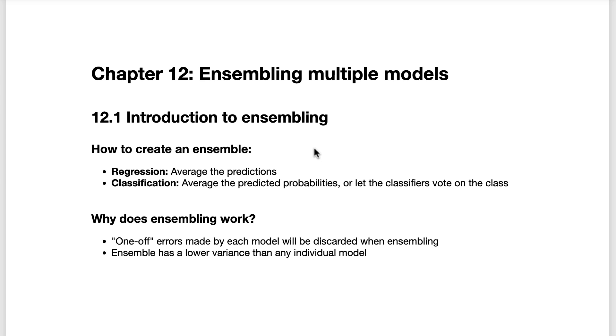The process for Ensembling is simple. For a regression problem, you calculate the average of the predictions made by the individual regressors and use that as your prediction.